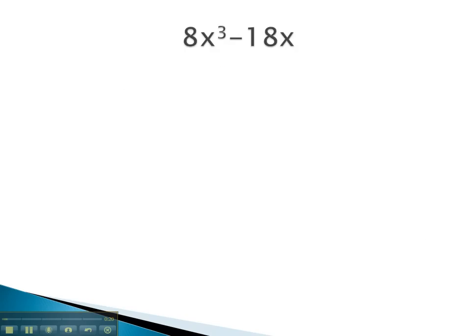This means in an expression like 8x³ minus 18x, before we worry about any other type of factoring, we first identify that the greatest common factor is 2x. Factoring out a 2x will leave us with 4x² minus 9.